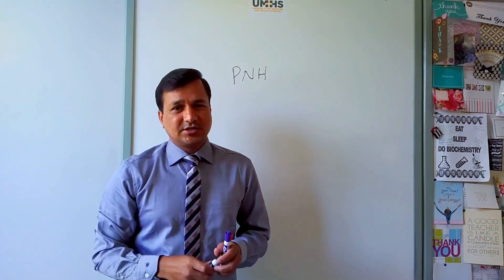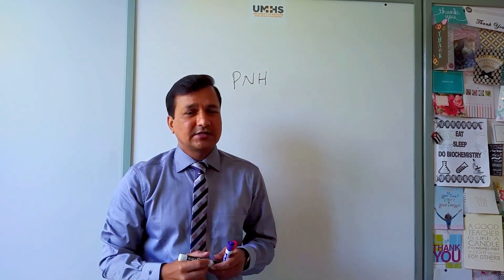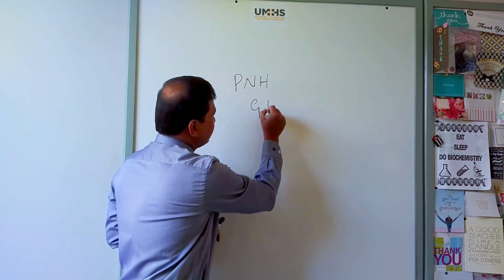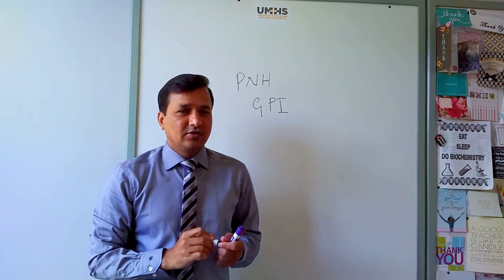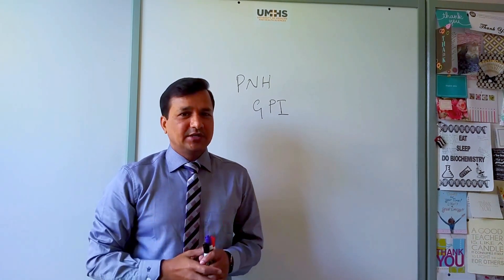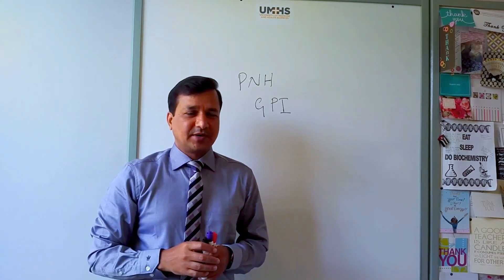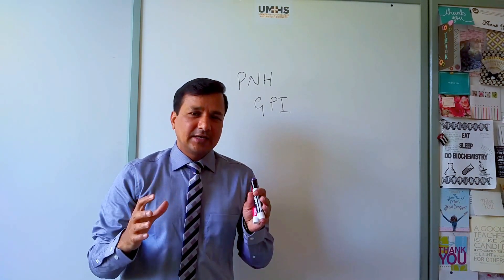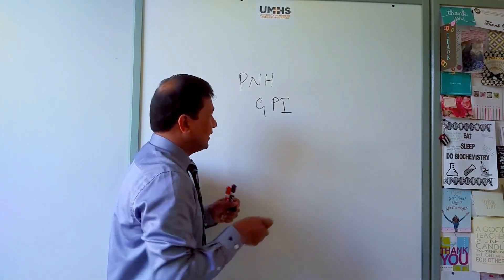GPI stands for glycophosphatidylinositol. It is a glycolipid which is used as an anchor to bind a protein to a cell membrane. The proteins that use GPI linkage to bind to the plasma membrane include DAF.